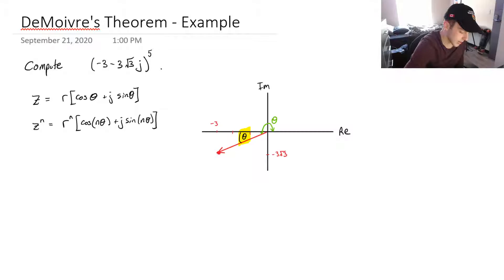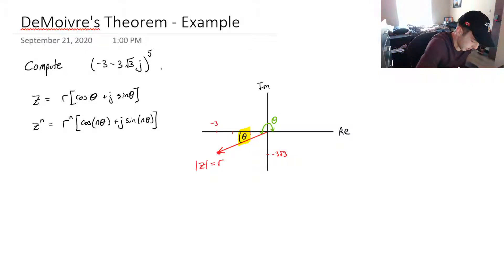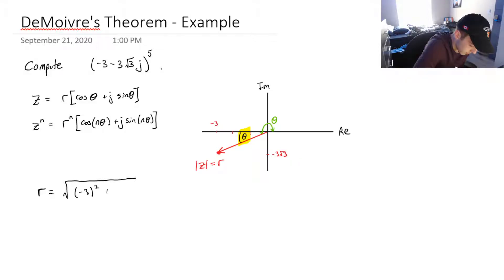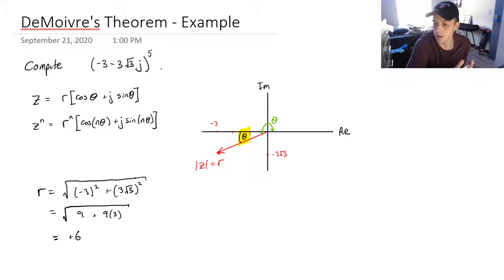The modulus of z equals r. We have a right triangle, so we can find this using the Pythagorean theorem: root of (minus 3 squared plus minus 3 root 3 squared). Solving this gives root of (9 plus 27), which is root 36, equal to positive 6. We take only the positive value since we're talking about the length.